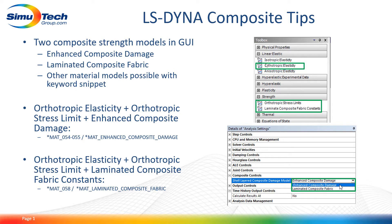So again, orthotropic elasticity, orthotropic stress limits, and the default setting of the shell layered composite damage model setting — this is located in Mechanical under analysis settings. By default that's Enhanced Composite Damage, so if you just put these two in you'll get that material model.